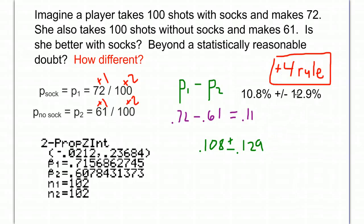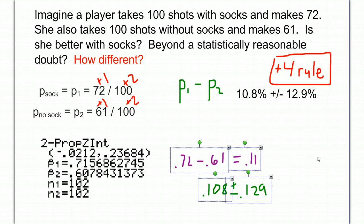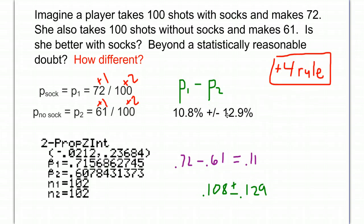Now this is something that's a little bit easier to understand. What's the difference in your shooting percentage here? The difference is that you shoot about 10.8% better with socks than you do without.